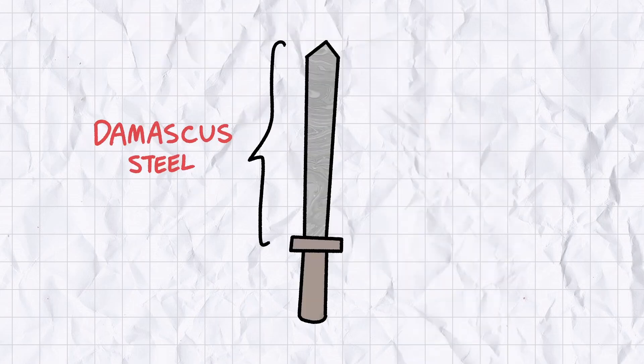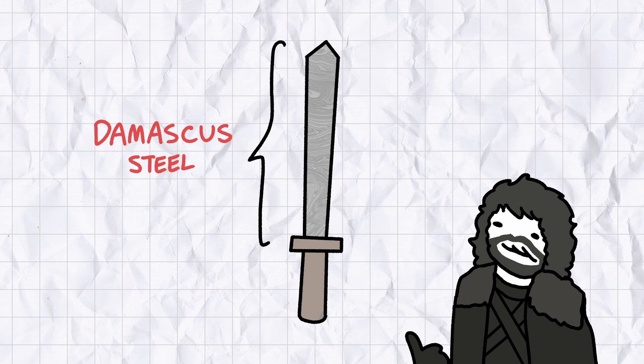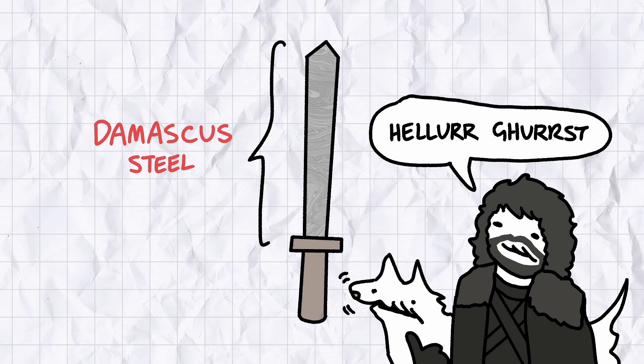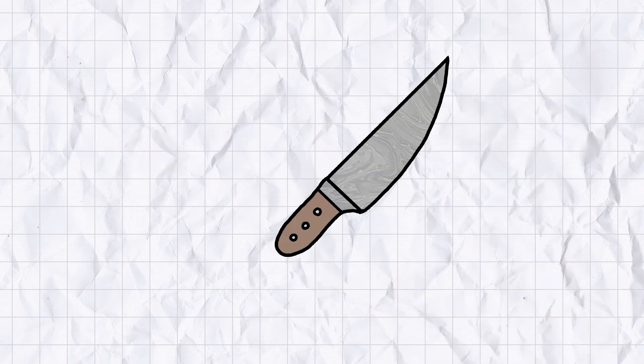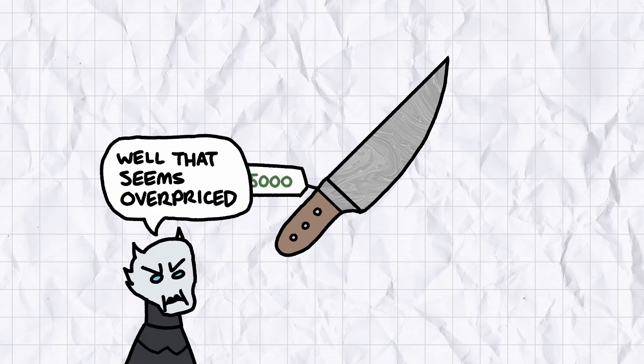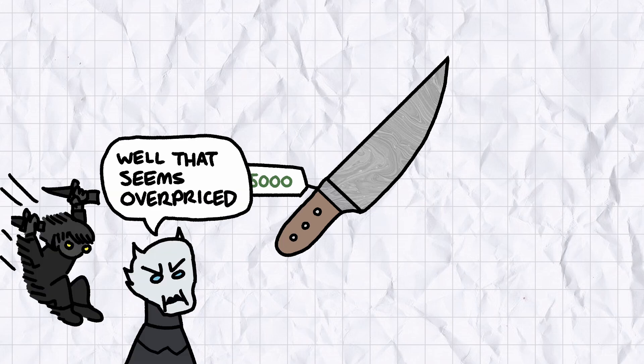Blades made of Damascus steel, the inspiration for Valerian steel in Game of Thrones, were coveted in antiquity for their sharpness and strength, strength that was only possible due to vanadium impurities in the iron ore. Depending on the number of layers used to make the blade, Damascus chef's knives can sell for upwards of $5,000, but vanadium alloys aren't just good for chopping tomatoes or stabbing white walkers in the ghoulies.